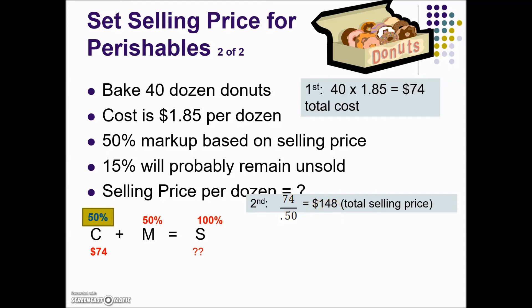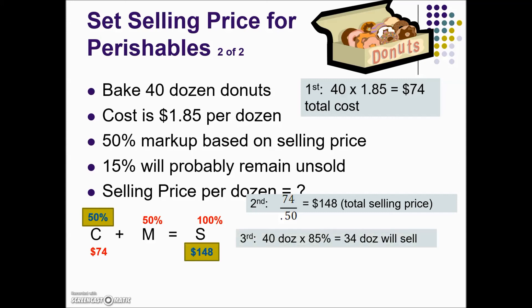Our next step is to find the number of dozen donuts that will be sold. We were given that 15% will remain unsold, which means 100% minus 15% — in other words, 85% — will sell. So 40 dozen times 85% means 34 dozen will sell.